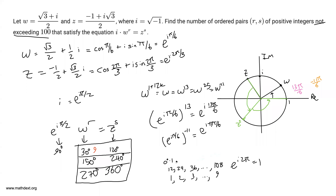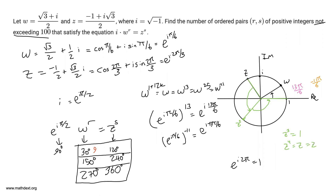Now, how many ways can z to the s hit the 120° mark? Since z cubed equals 1, z to the 4 equals z, z to the 7 equals z squared, and so on. So z to the 1, z to the 4, z to the 7, and so on up to z to the 100 all work. Adding 2 to each gives 3, 6, 9, ..., 102; dividing by 3 gives 1, 2, 3, ..., 34. So there are 34 possible values of s.